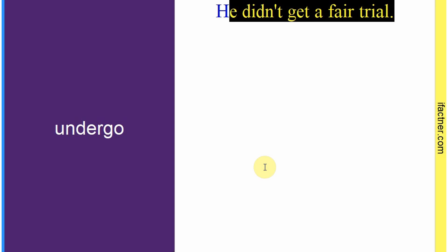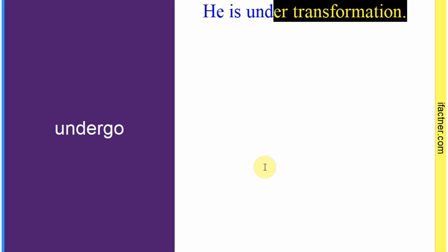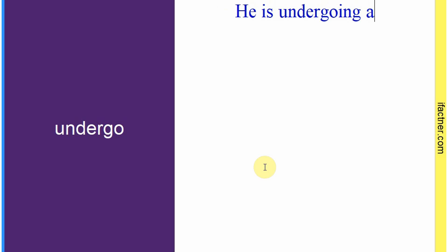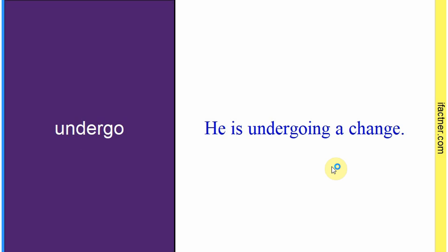Word hai: 'undergo'. Sentence banaate hain meaning samajhne ke liye: 'He is undergoing a change.' Us mein tabdeeli aa rahi hai. 'Undergo' ka matlab hai is waqt guzar raha hai — woh ek tabdeeli se guzar raha hai. Sentence banaaya: 'He is undergoing a change.'